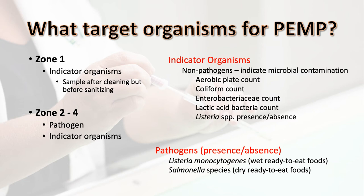Quantitative data for the indicator organisms is expressed in numbers, most often colony-forming units (CFU) per square inch or square centimeter, or per volume in some cases. If Listeria monocytogenes is your pathogen of concern, you may choose to test for presence or absence of Listeria species on zone 1 surfaces. Indicator organisms can also be used in zones 2 through 4, but often in those zones you are looking for the presence or absence of your pathogen of concern — usually Listeria monocytogenes for wet, ready-to-eat food processing facilities, and Salmonella for dry, ready-to-eat food processing facilities.